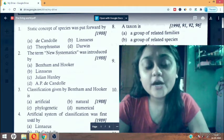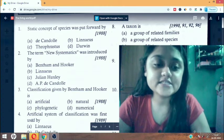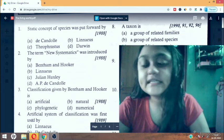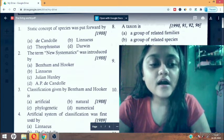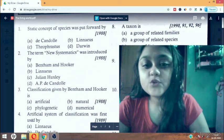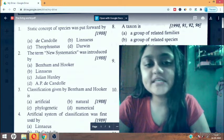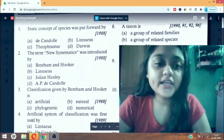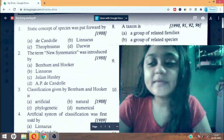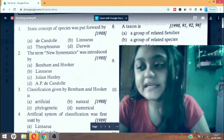Third question is classification given by Bentham and Hooker is classification. Options are artificial, natural, phylogenetic, numerical. Option will be B, natural.